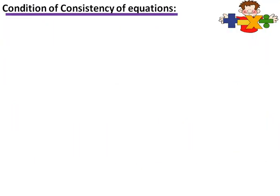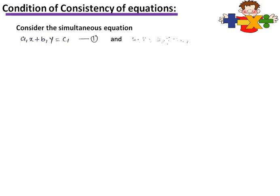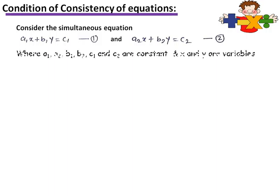Consider the following equations: a1x + b1y = c1 (equation 1) and a2x + b2y = c2 (equation 2). Here a1, a2, b1, b2 and c1, c2 are the constants, and x and y are the variables.